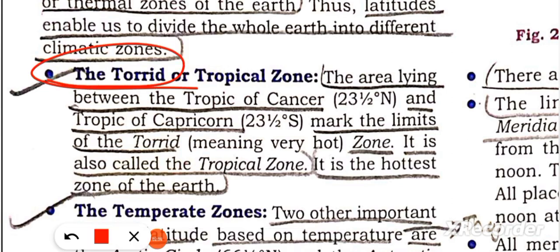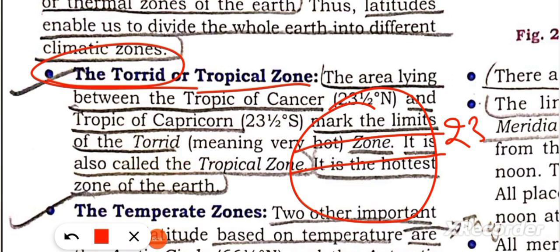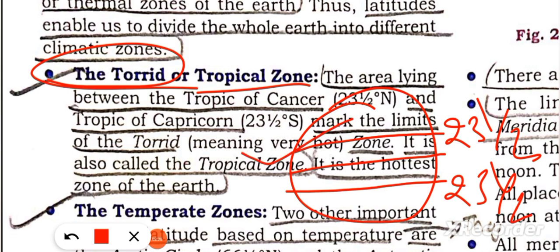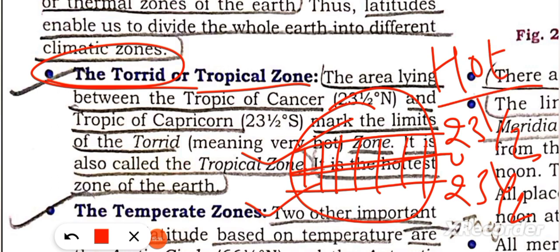The first heat zone is the Torrid Zone, which is the tropical zone. This area runs from the zero degree equator to 23.5 degrees north (Tropic of Cancer) and 23.5 degrees south (Tropic of Capricorn). This whole belt is hot because the sun's rays are direct here for six months, and the sun is always overhead near the equator.